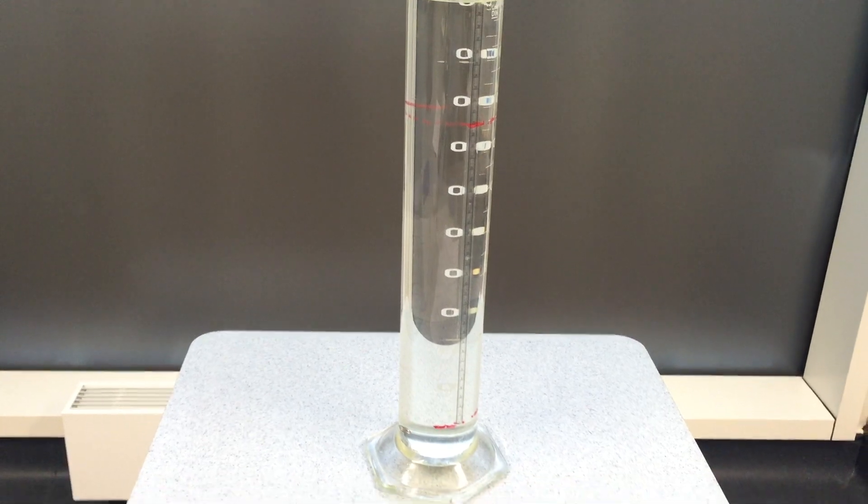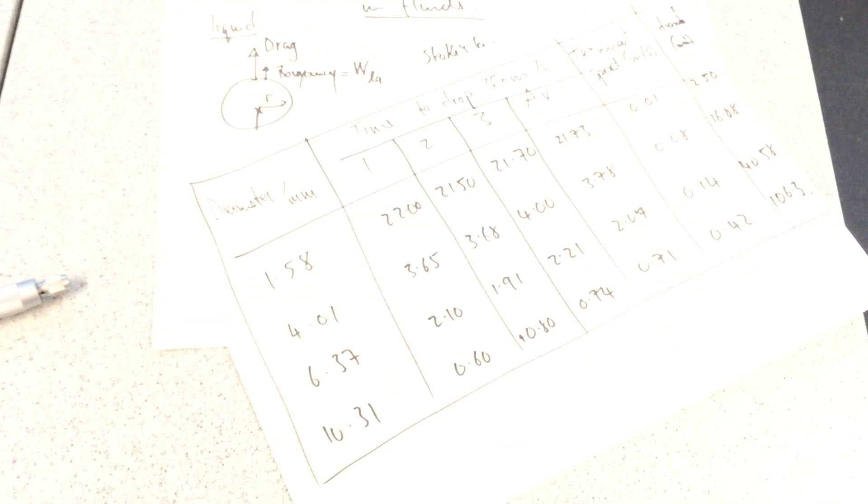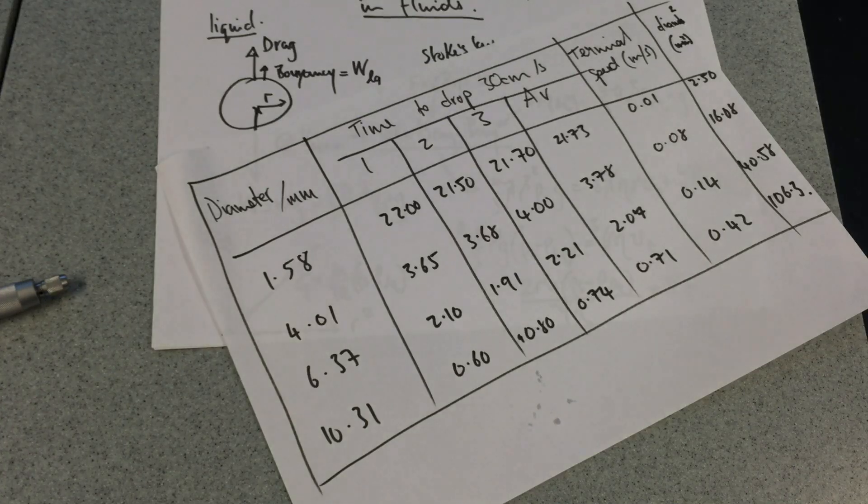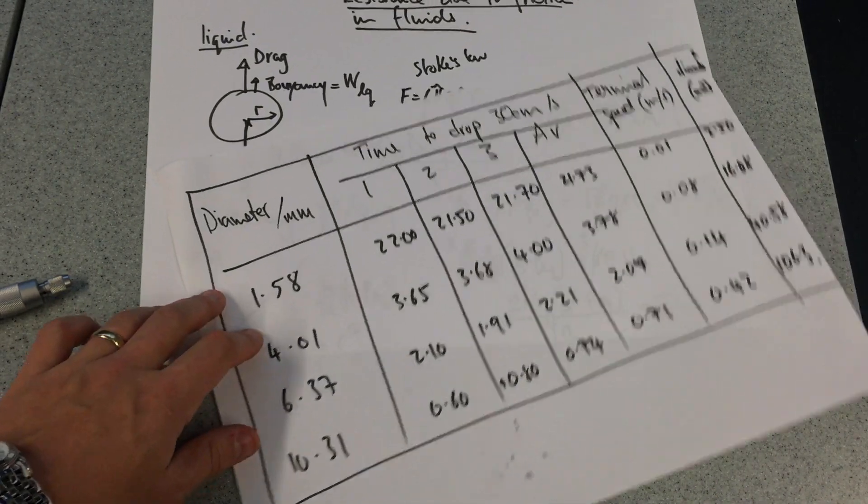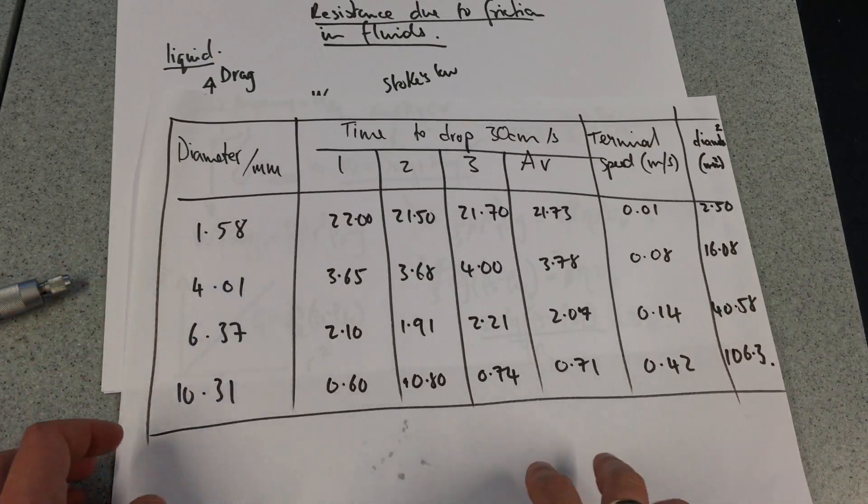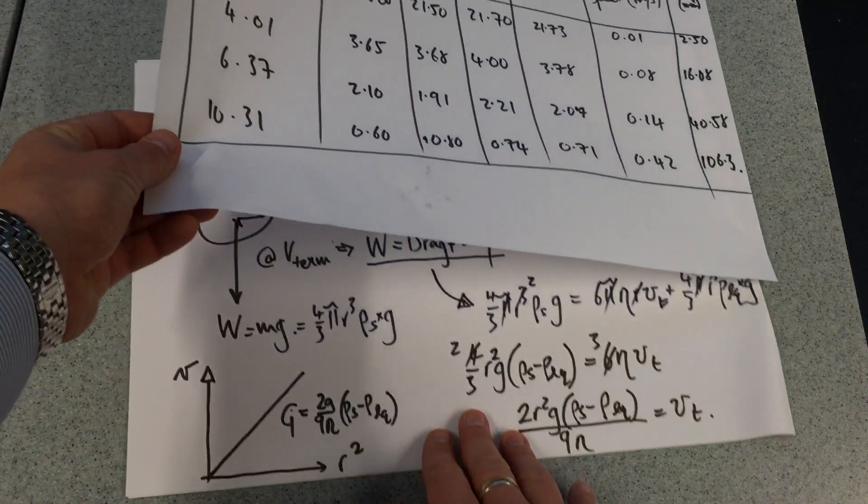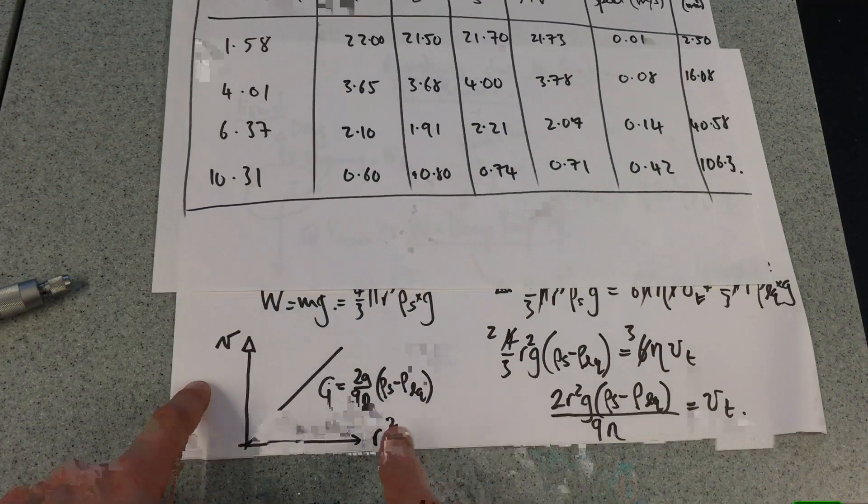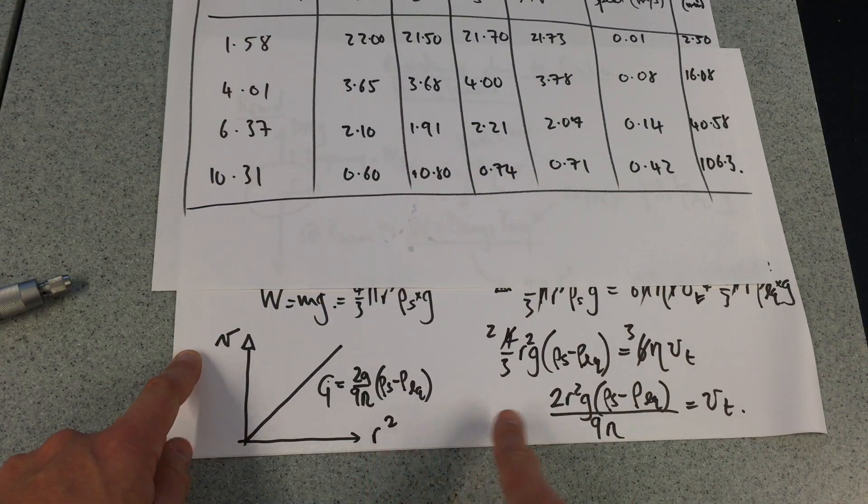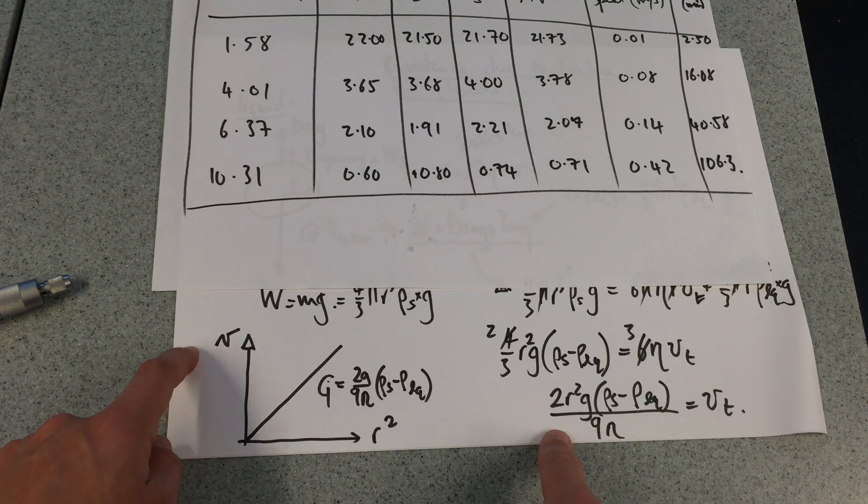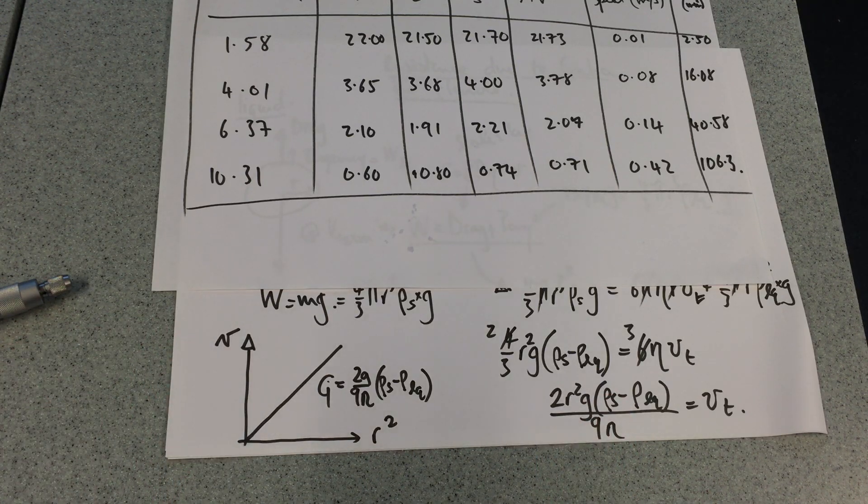Just coming back to the results again. There are the results, and we're going to plot the velocity against the radius squared to see whether this relationship is proved correct. Hope that makes sense. See you next time.